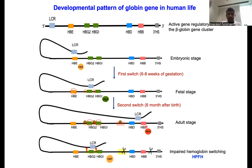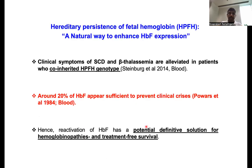However, some individuals still express fetal hemoglobin even at the adult stage, due to small point mutations or long deletions in the hemoglobin cluster at chromosome 11, which leads to high fetal hemoglobin — called hereditary persistence of fetal hemoglobin (HPFH). There is impaired hemoglobin switching that leads to an HPFH-like condition. The clinical symptoms of sickle cell or beta-thalassemia are alleviated in patients who inherit the HPFH genotype.